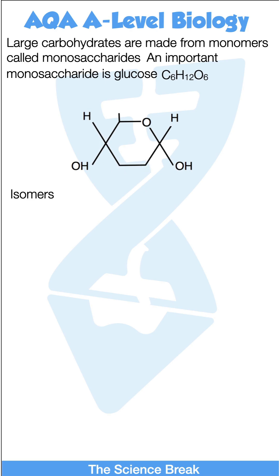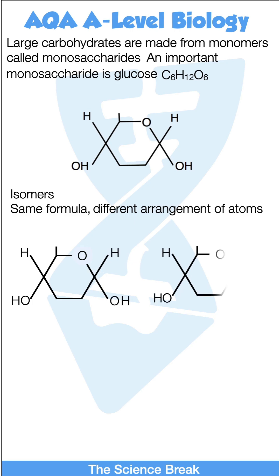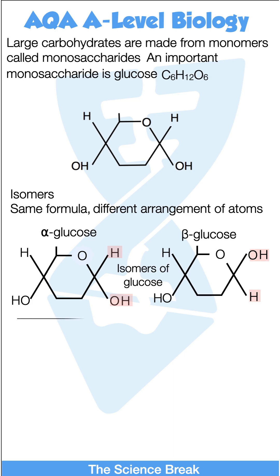Glucose has isomers. These are molecules with the same formula but a different arrangement of atoms. Here are two isomers of glucose. The difference is the position of the H and the OH as shown. On the left is alpha glucose, and on the right is beta glucose.